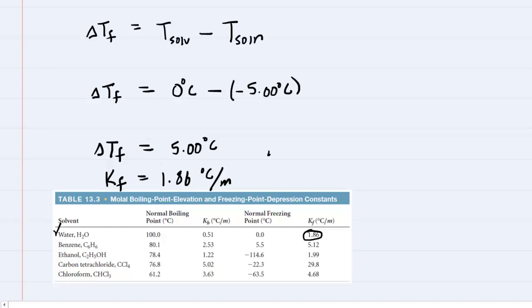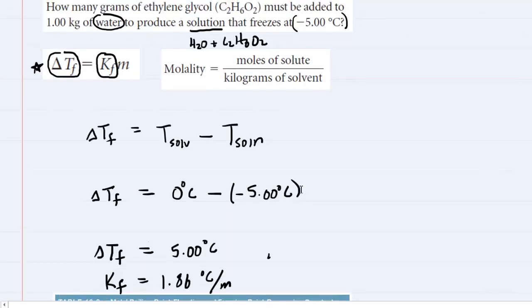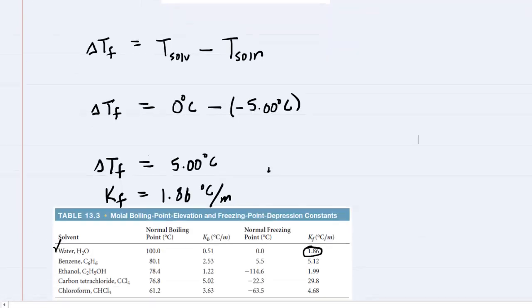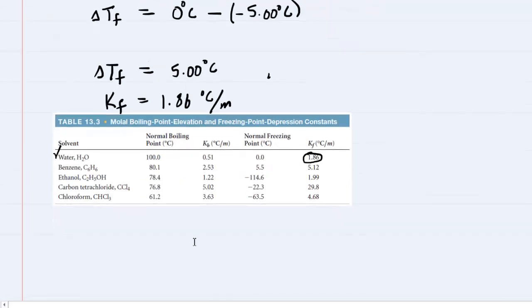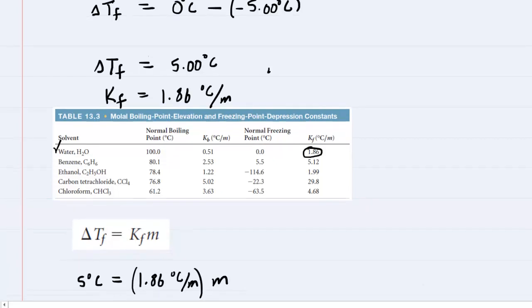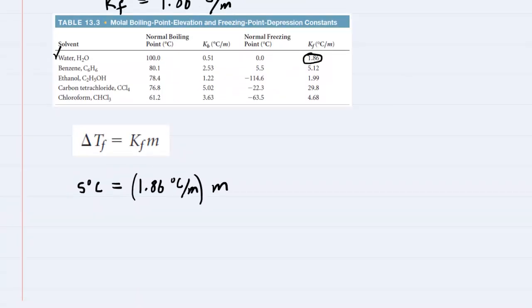Therefore, when we have those two values, we can come over and use the freezing point depression equation to calculate little m, and little m will be the molality, which we will need in a moment. So we're going to plug in for delta Tf, the 5 degrees Celsius, and then for Kf, it's 1.86 degrees Celsius per molal. This is multiplied by the molality. We're going to solve for molality, and to do that, we will divide both sides of the equation by 1.86 degrees Celsius per molal.